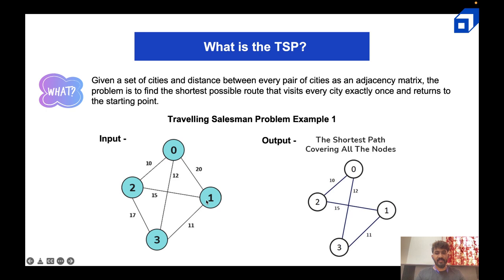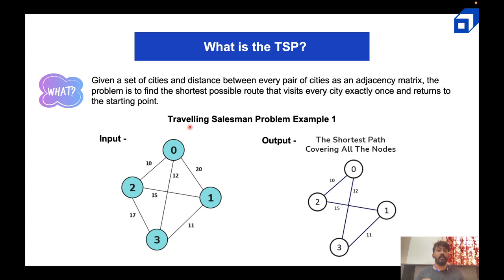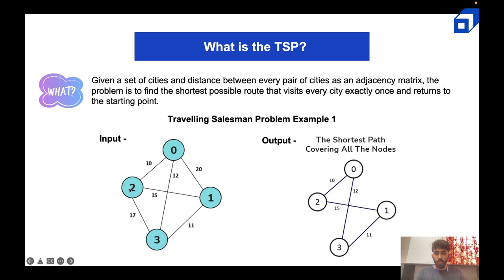Let's take an example input with four cities: zero, one, two, three. The traveling salesman starts from city zero but has to visit all cities once and return back to the starting point. So which path should he take — zero to one to three to two to zero, or zero to one to two to three to zero? First, you look at the shortest paths between all individuals. For example, from zero, the shortest path is ten, so the salesman should first go to city two.